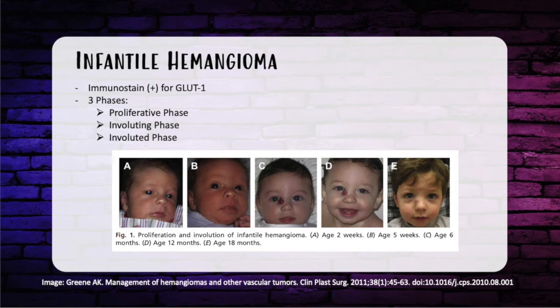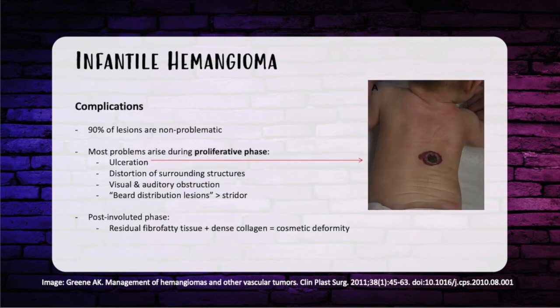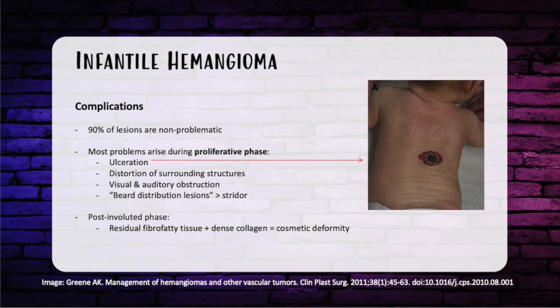Size of the hemangioma or sex of the patient have no influence on prognosis or resolution. 90% of these lesions are non-problematic; however, complications can arise, especially during the proliferative phase — including ulceration, distortion of surrounding structures causing visual and auditory obstruction, and beard distribution lesions that can cause stridor. Even after involution, a residual fibro-fatty tissue mixed with dense collagen can cause cosmetic deformities.